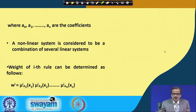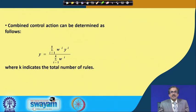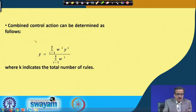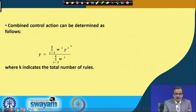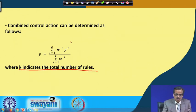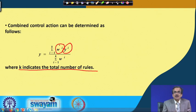Once we have the weight of the ith rule, we can find out the combined output very easily. For the combined control action, the output y is the summation from i=1 to k of wi multiplied by yi, divided by the summation from i=1 to k of wi, where k indicates the number of fired rules, yi is the output of the ith rule, and wi is its weight.